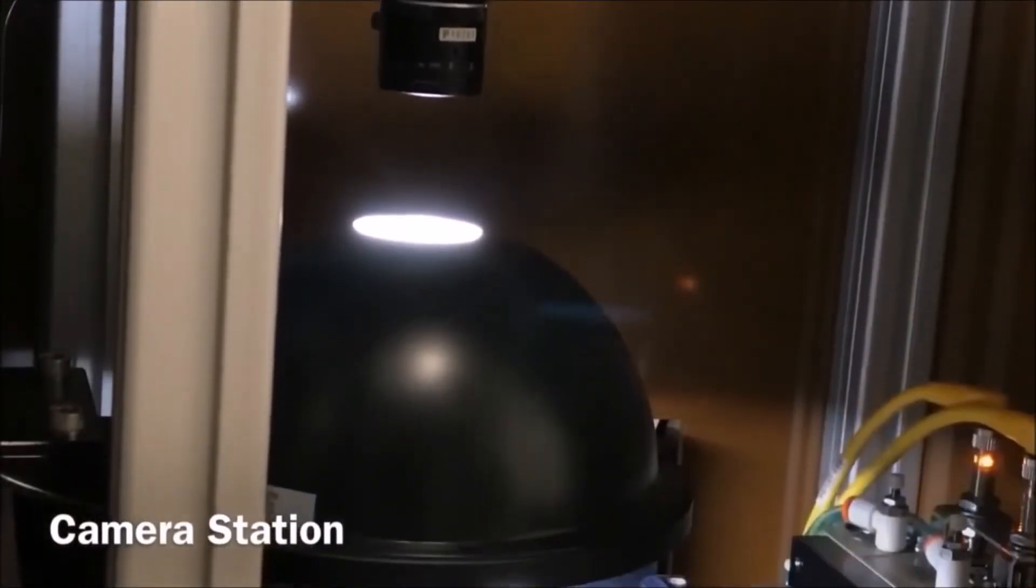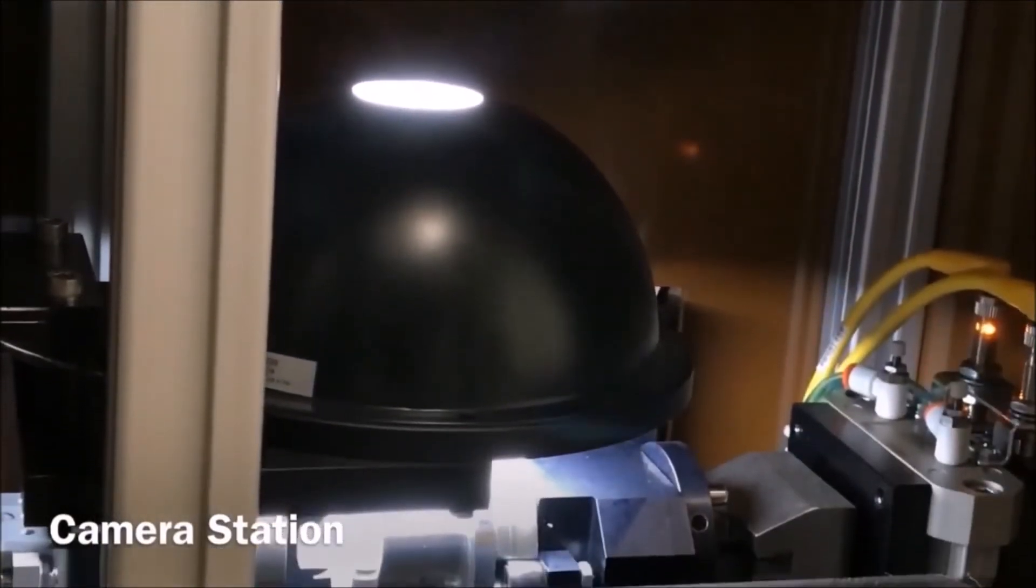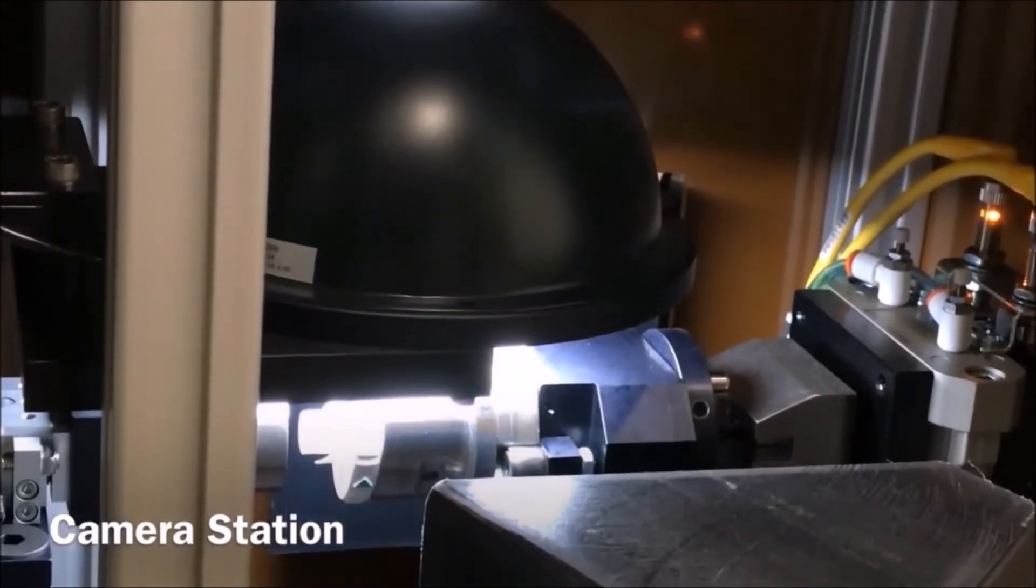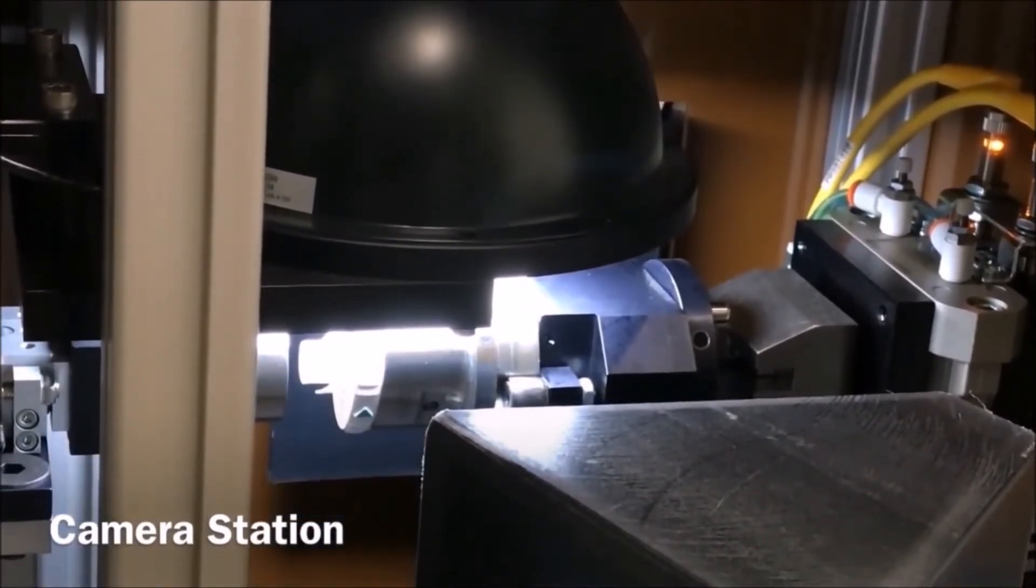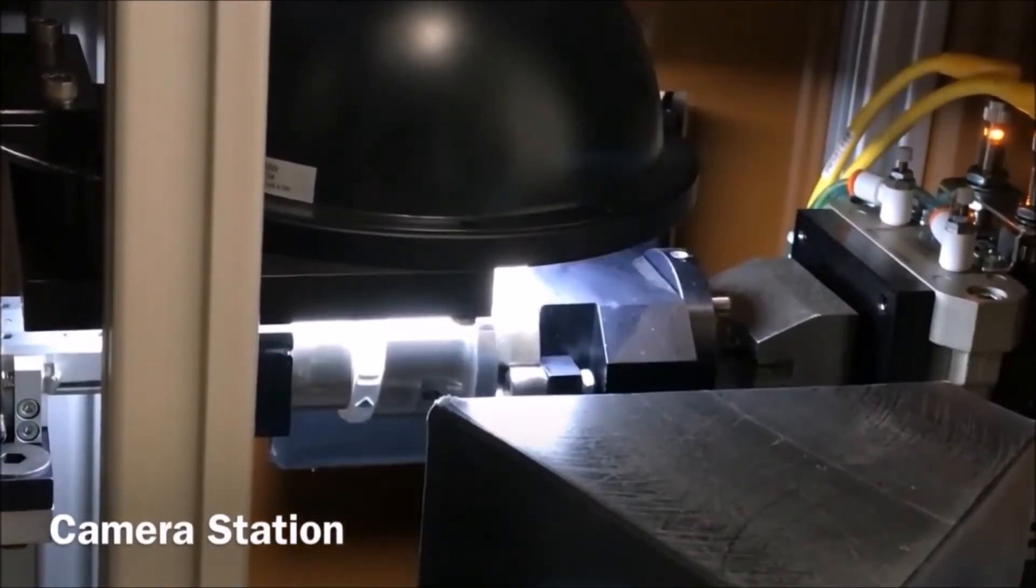Another common option for automations is the addition of an inspection system, in this case a vision system. These systems test for image present as well as quality checks to ensure there are no issues with the ink transfer.